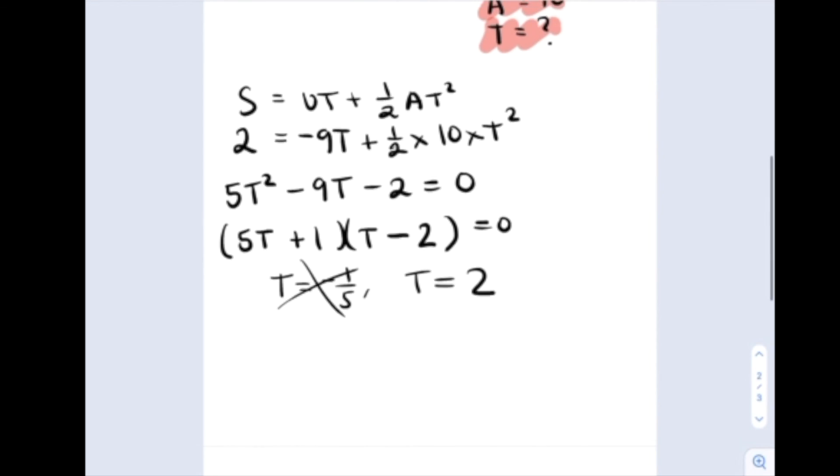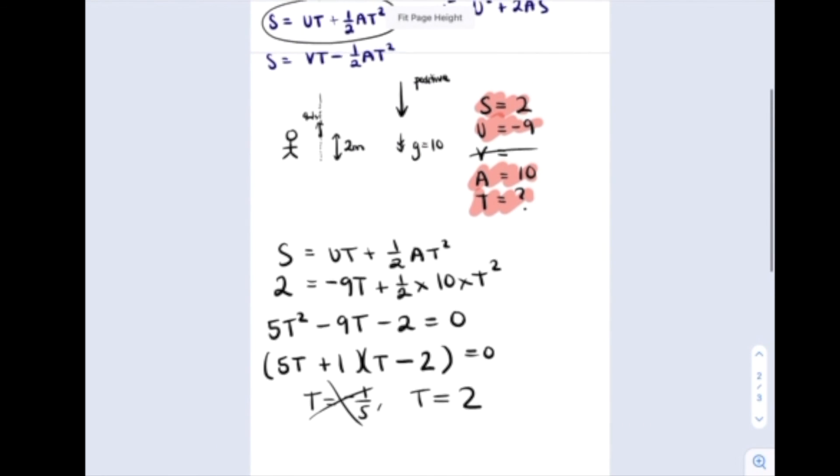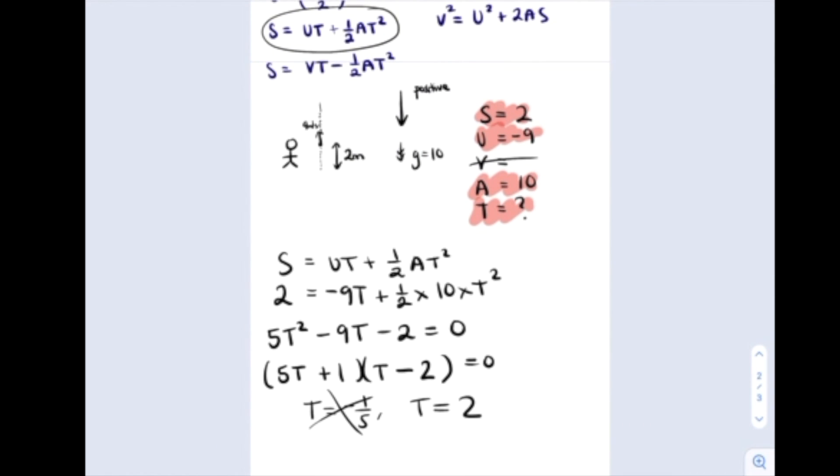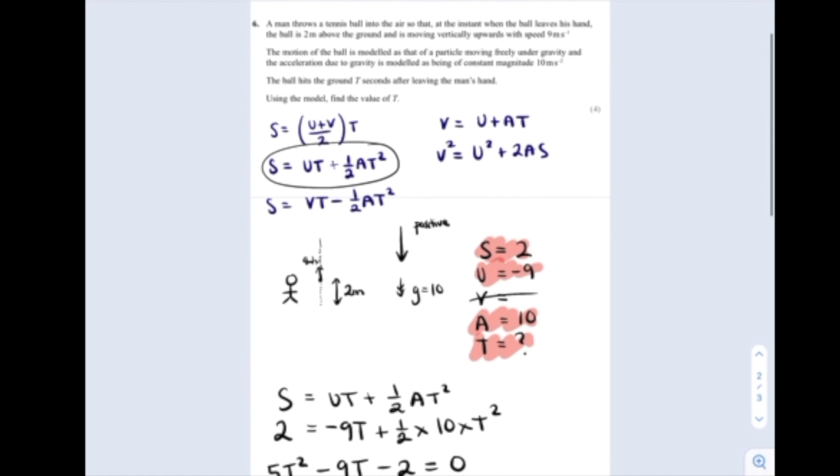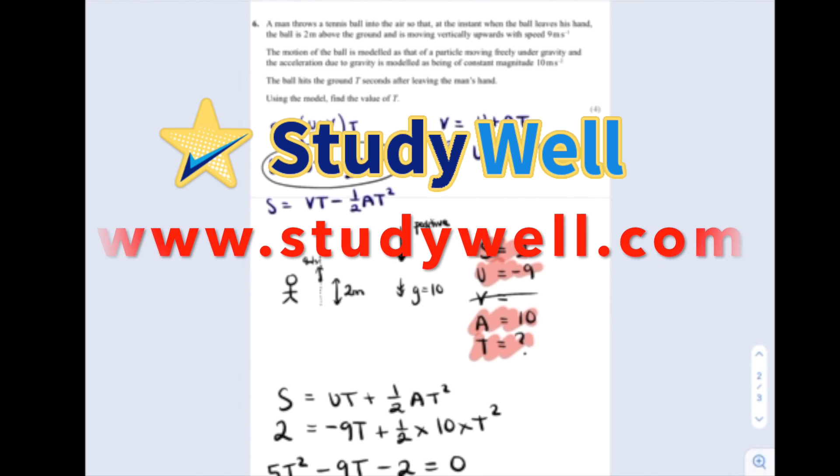So it takes the ball 2 seconds to go up in the air, starting 2 meters above the ground with an initial velocity of 9 meters per second, reaches a maximum height, comes back down, hits the floor after 2 seconds. And that finishes the question. There's another SUVAT equations question on this paper, so check out more videos at studywell.com.